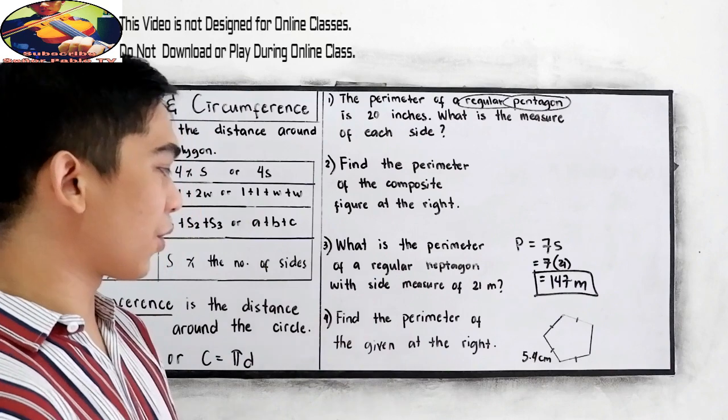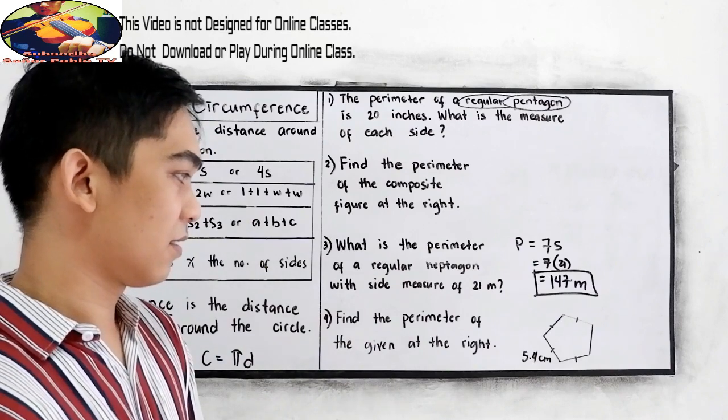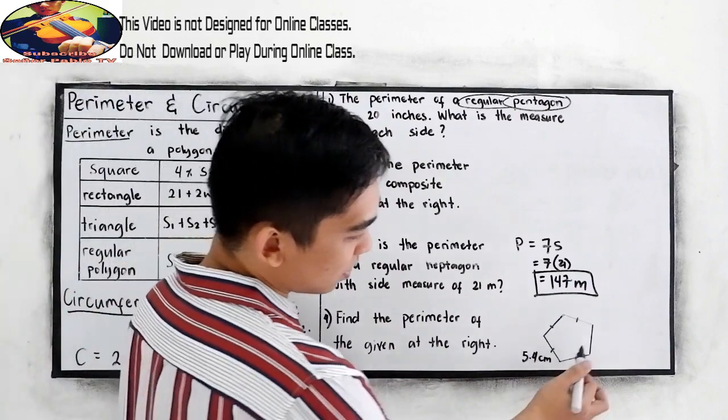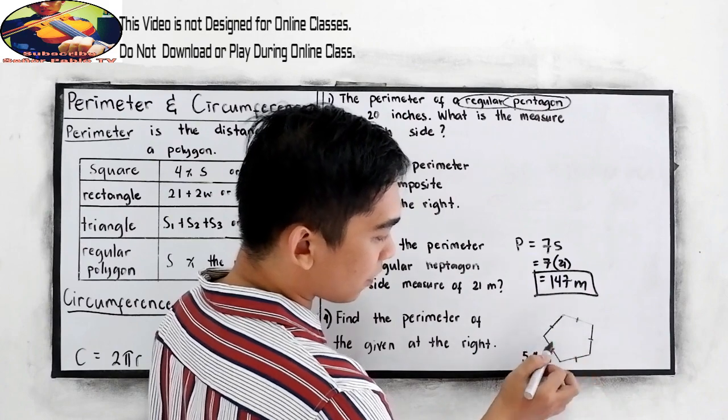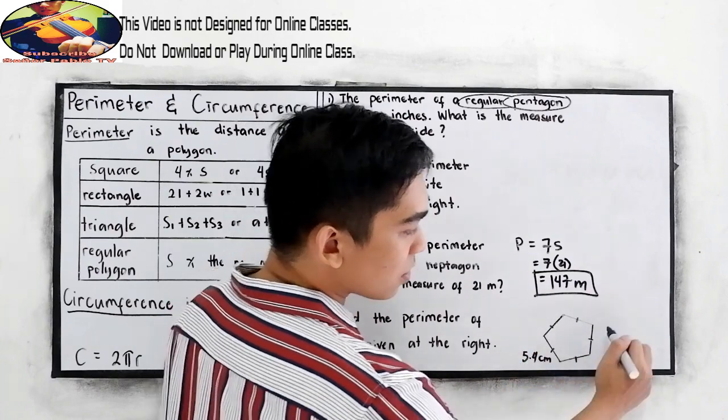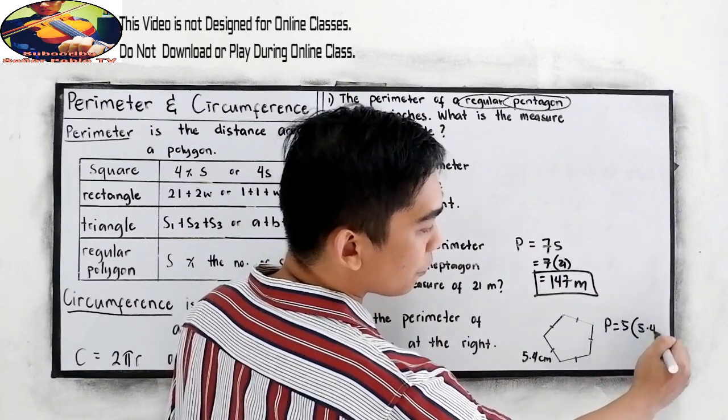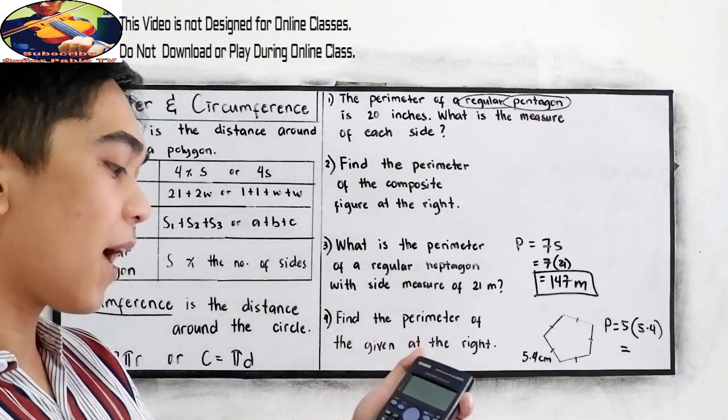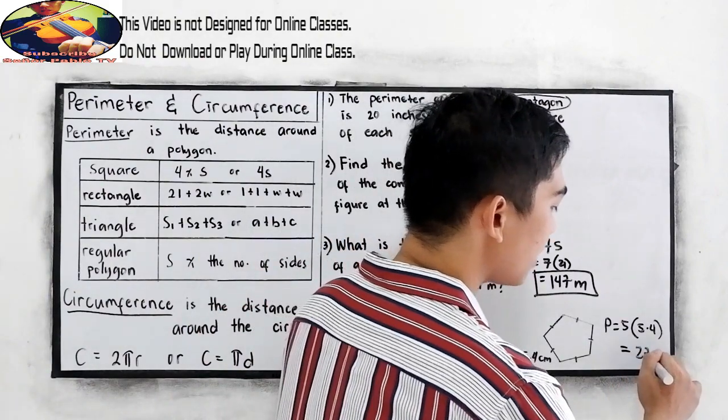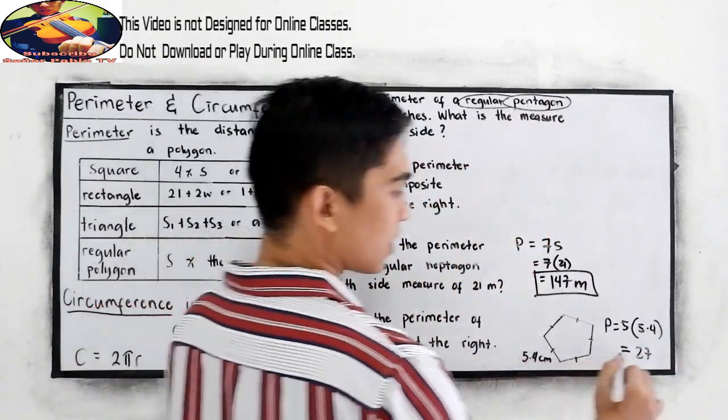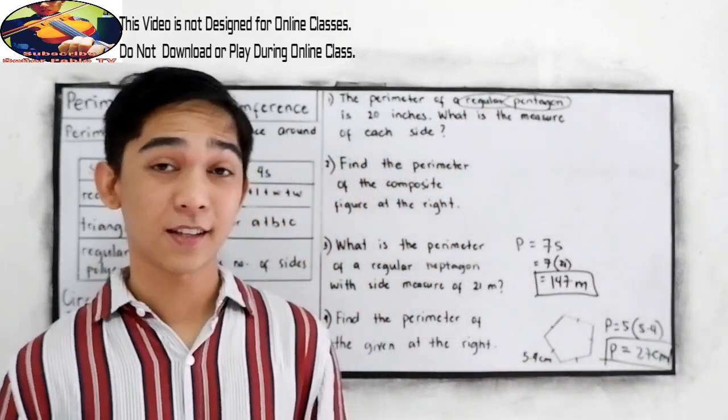And for number four, find the perimeter of the given at the right. So this is a regular pentagon: 1, 2, 3, 4, 5 sides. Five-sided polygon. So the perimeter is equal to 5 times 5.4. So let's multiply 5 times 5.4. That is 27. And our unit is centimeters. Okay. That would be our final answer.